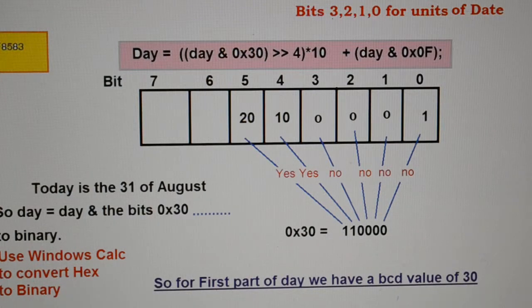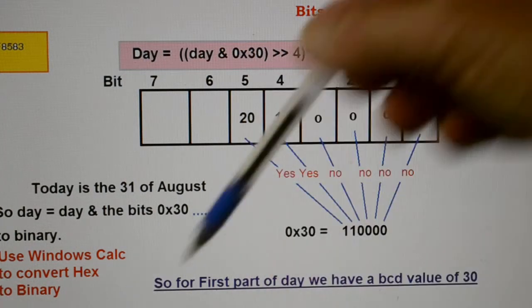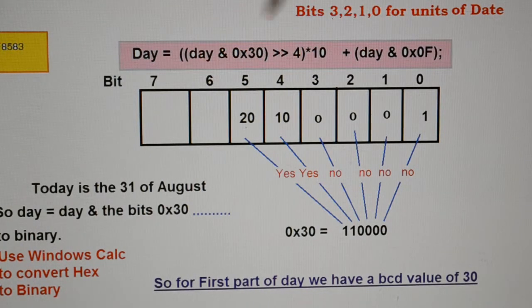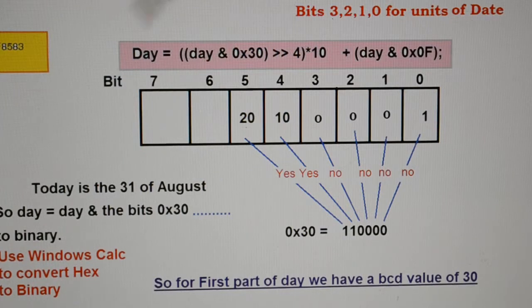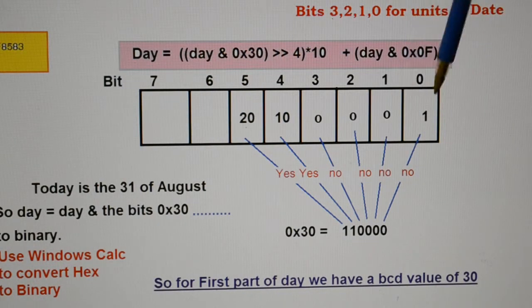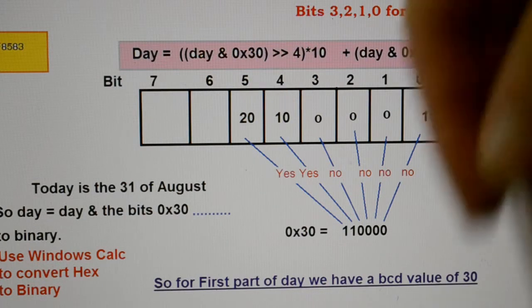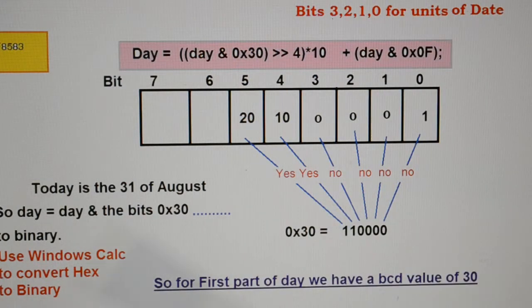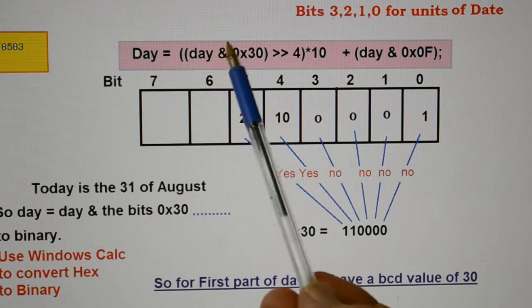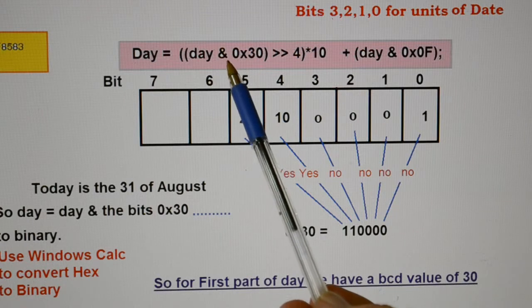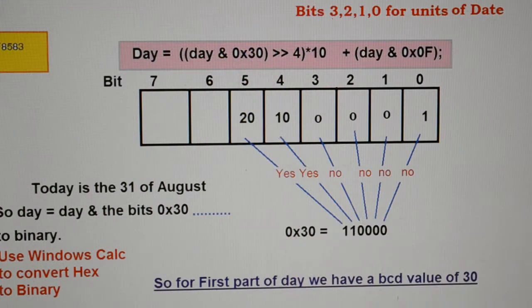So, for our date, although they call it a day on the program, it's actually a date. So, today is actually the 31st of August. So, inside the chip, we'd expect to have a 1 there, a 1 there and a 1 there. So, going to this code, day equals day AND, so this referring to a bit, AND 0x30. So, let's get this 0x30 out of the way first. And I'm running out of time.